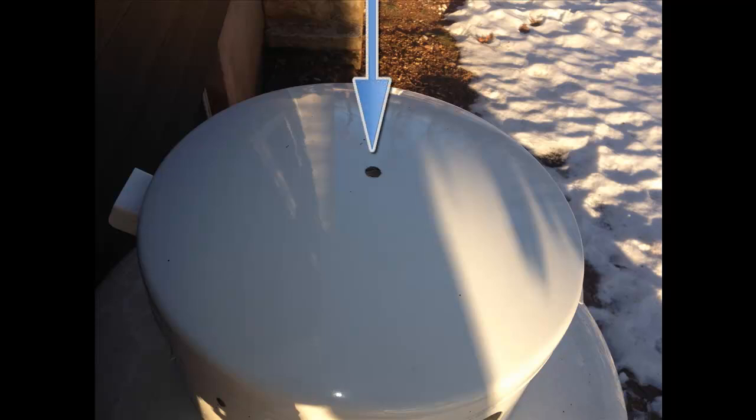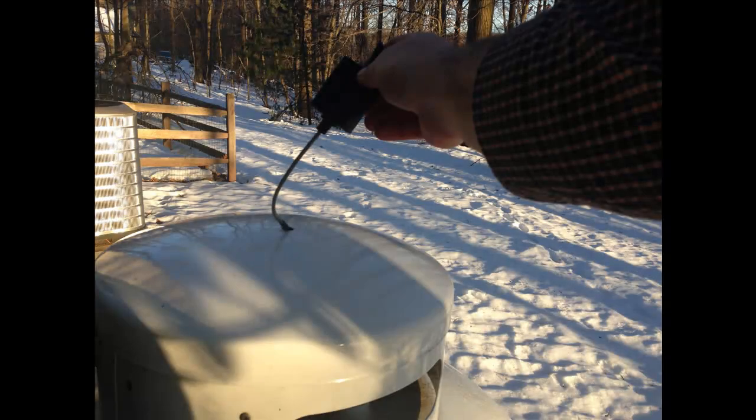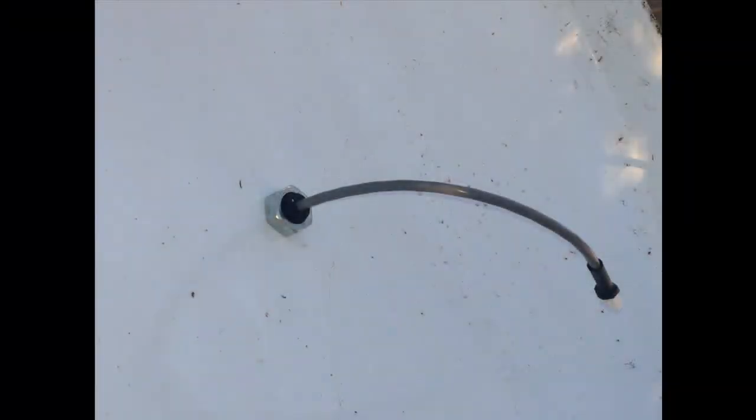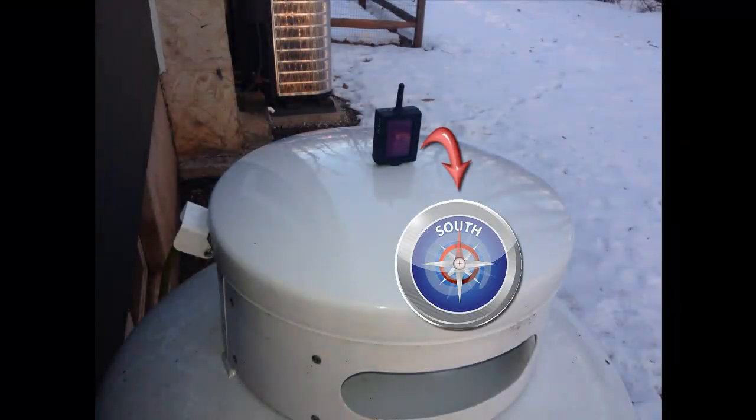Drill a one-half-inch hole in the top of the tank cover, also known as the dome. Install the transmitter with the one-half-inch nut. Rotate the transmitter so the solar cell faces south.